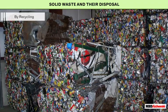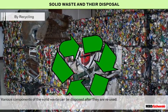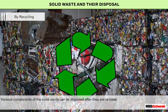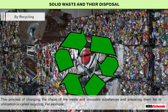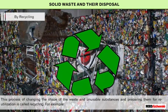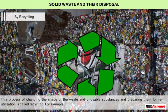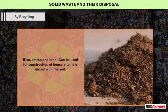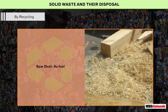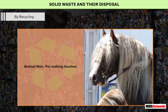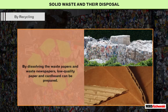By recycling: various components of solid waste can be disposed of after they are reused. This process of changing the shape of waste and unusable substances and preparing them for reutilization is called recycling. For example, rice, cotton, and bran can be used for construction of a house after being mixed with soil. Sawdust can be used as fuel, and animal hair can be used for making brushes. By dissolving waste papers and newspapers, low-quality paper and cardboard can be prepared.